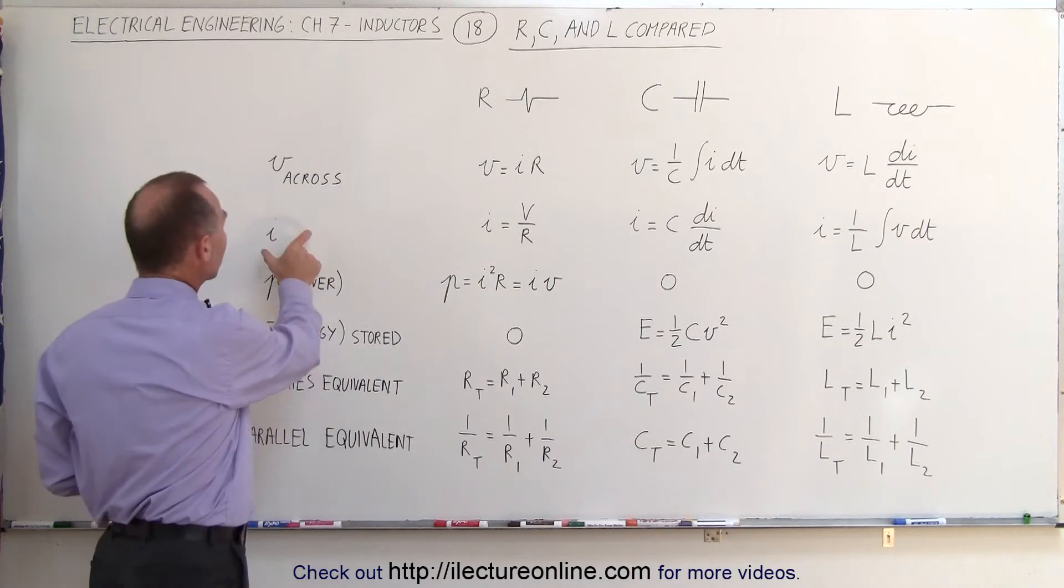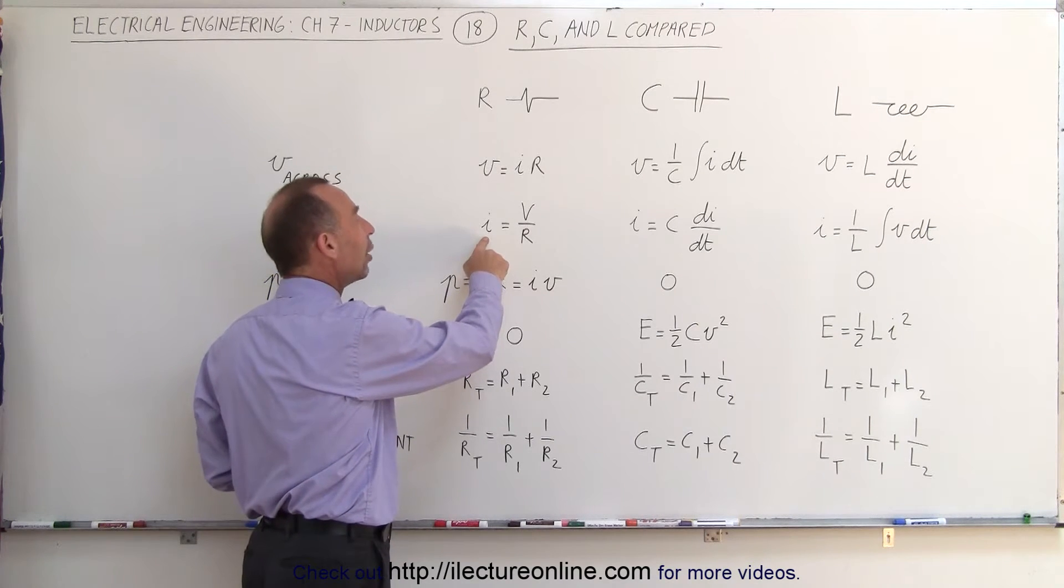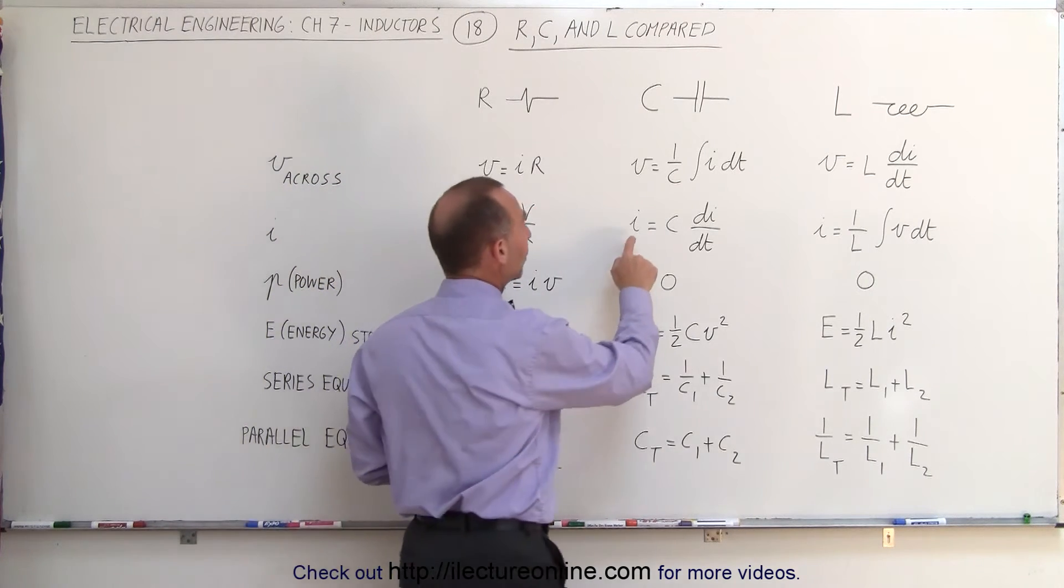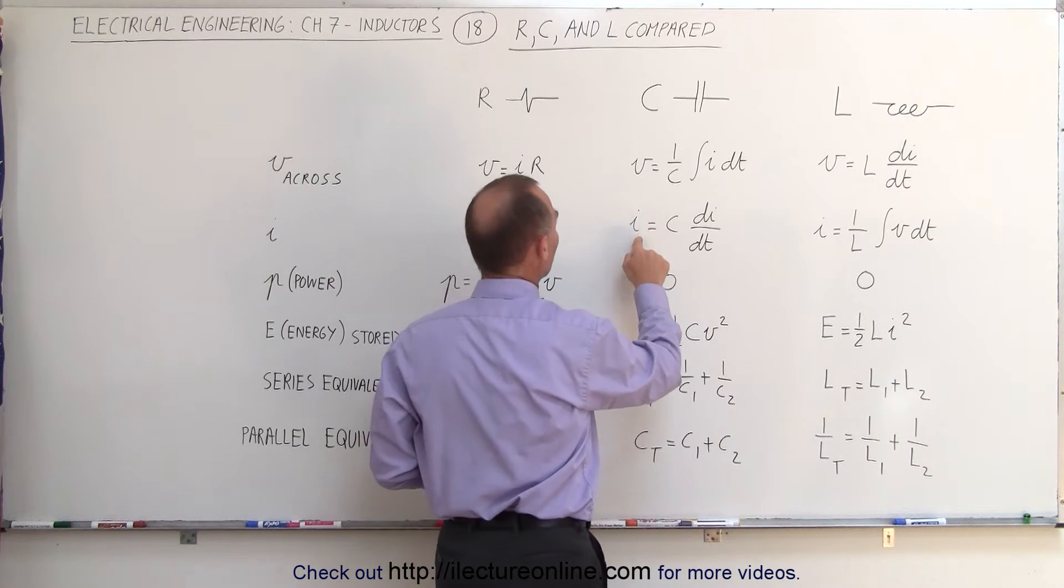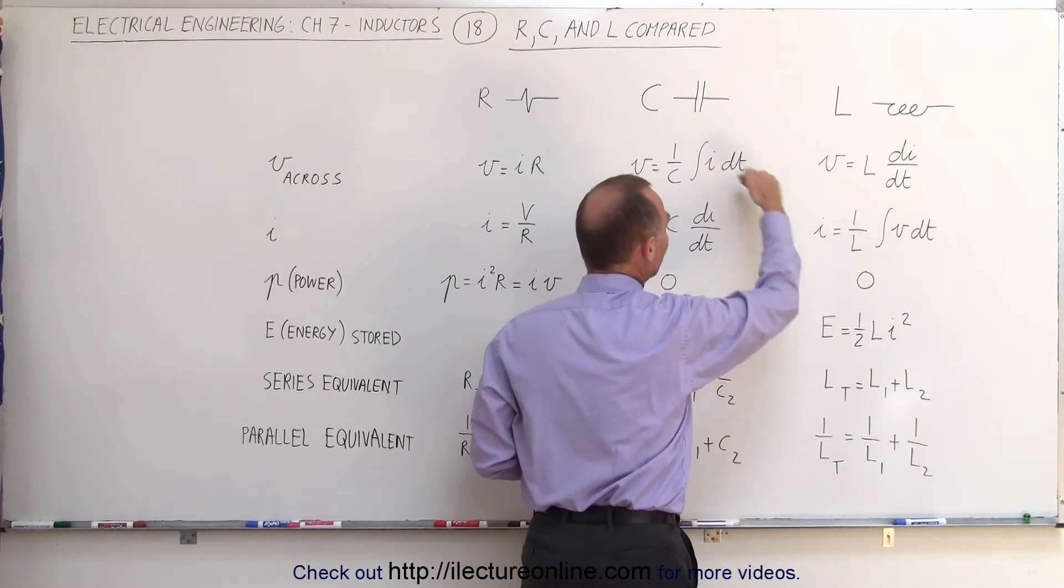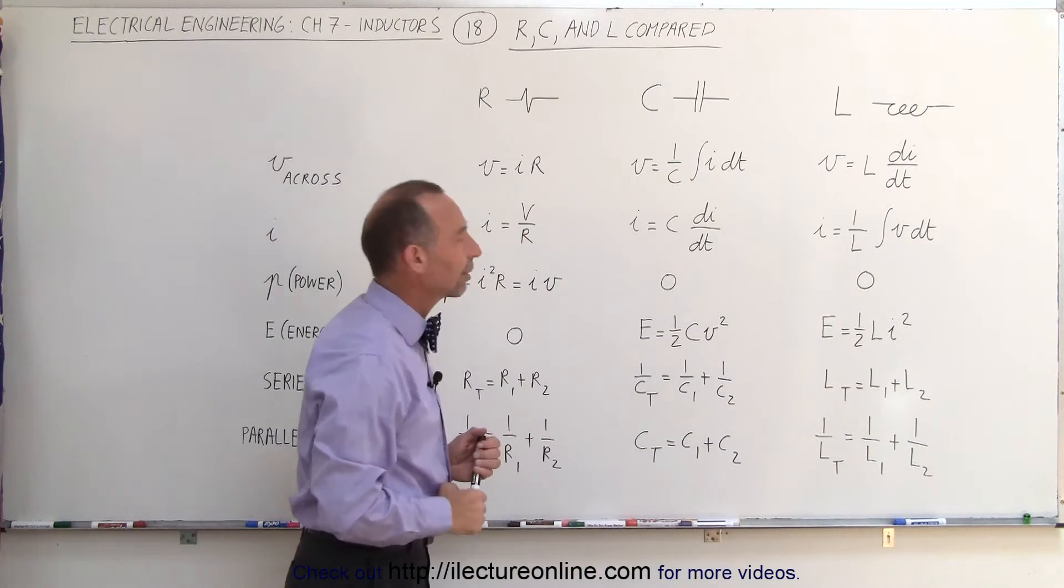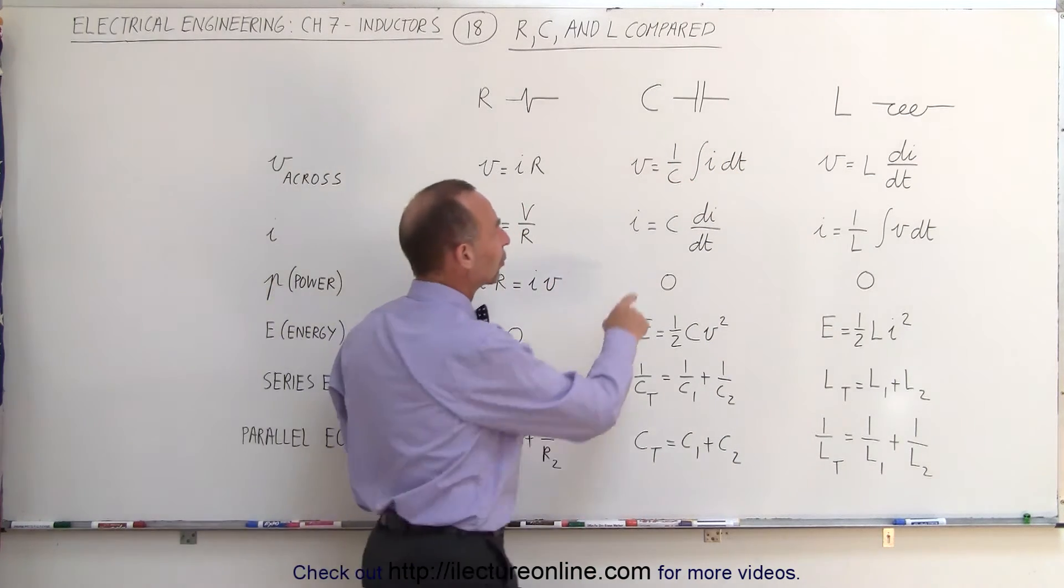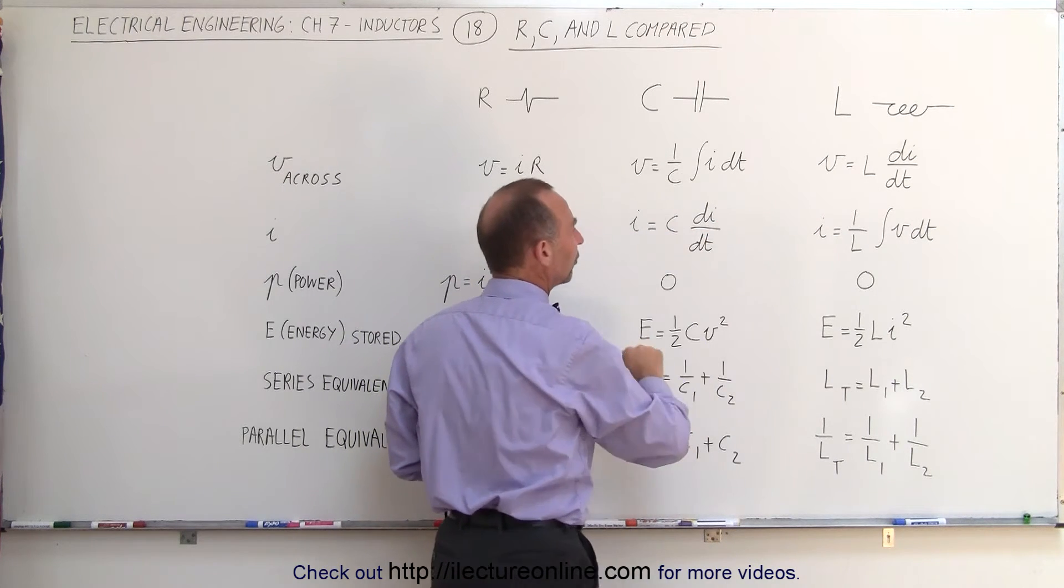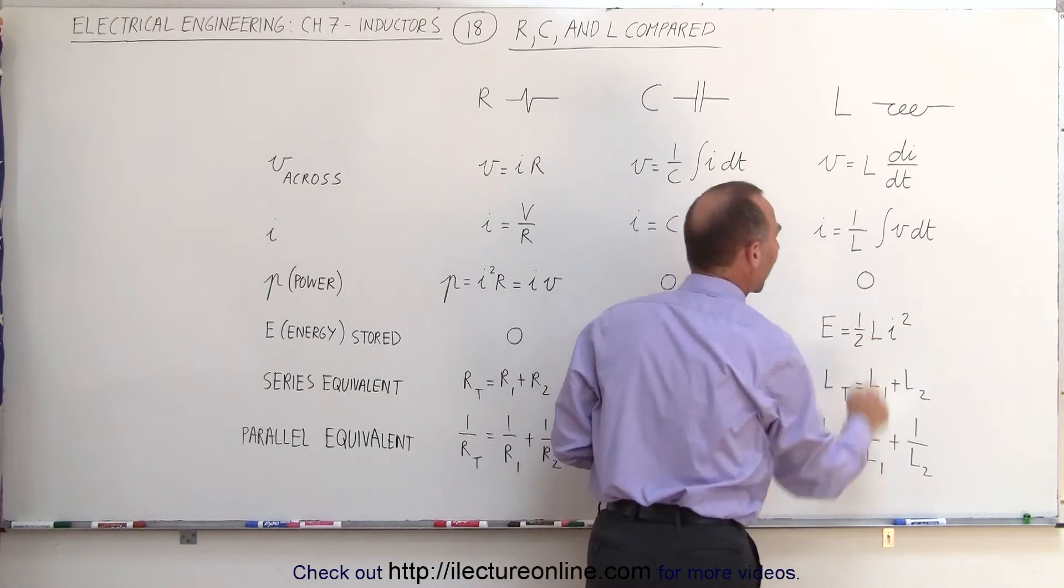But if we're trying to find the current through the devices, for a resistor, it's simply Ohm's law, I equals V over R. For a capacitor, notice how the equation here for the current through the capacitor is similar in form as the voltage across an inductor. And notice that the current through an inductor is the same as the voltage across a capacitor. Here you can see that the current through a capacitor is simply the capacitance times the time rate of change of the current. And here the current through an inductor is 1 over the inductance times the integral of the voltage times dt.